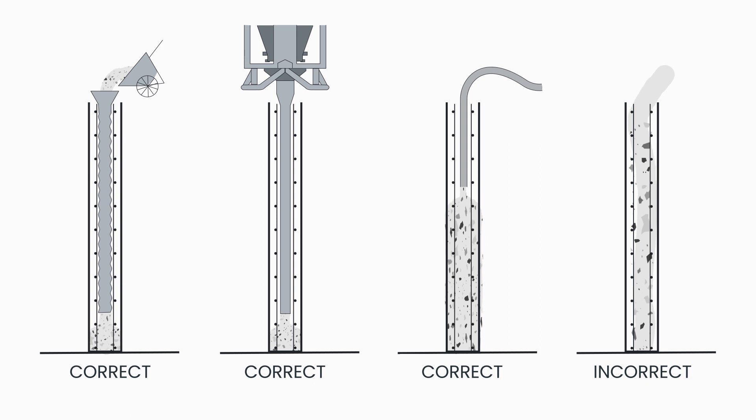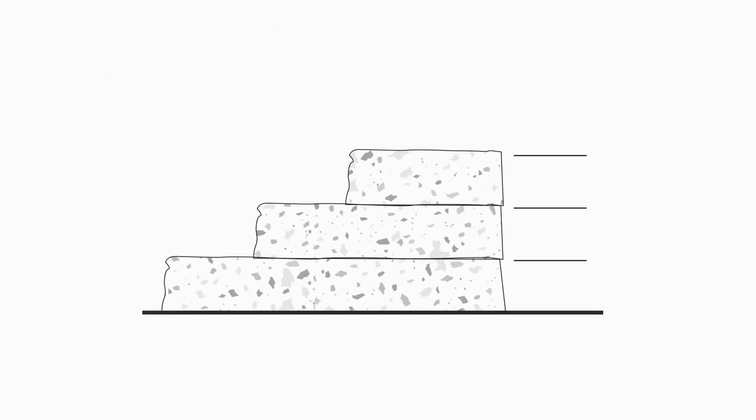Mortar is also left on the form faces and reinforcement. In deep sections such as walls, footings and large columns, concrete should be placed in 300mm layers to improve compaction.